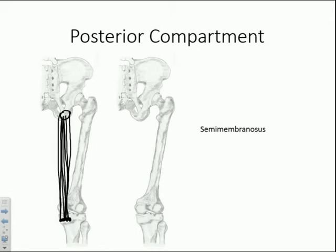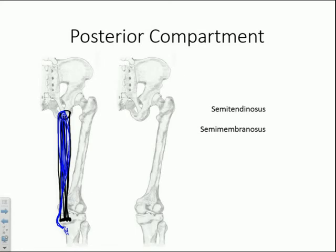The second muscle, semitendinosus, originates off the same spot but lies on top of semimembranosus for most of its course. Toward the terminal portion, the fibers become very thin and project out toward the anterior tibia, attaching into the pes anserinus — making it the third muscle attaching there. Proximally it almost completely masks semimembranosus, but distally you can see semimembranosus on either side. In a sitting position with the knee flexed, you can feel the thick semimembranosus medially and the thin semitendinosus tendon just superficial to it.